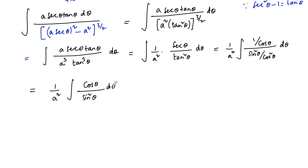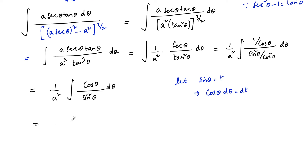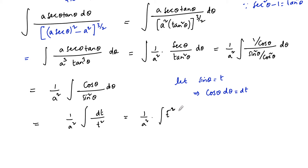So we have (1/a²) times the integral of cos(θ)/sin²(θ) dθ. Let sin(θ) = t, which implies cos(θ) dθ = dt. Our integral becomes (1/a²) times the integral of dt/t², that is (1/a²) times the integral of t^(−2) dt.